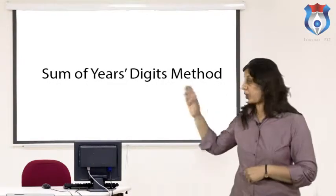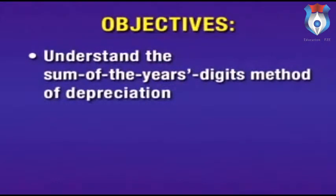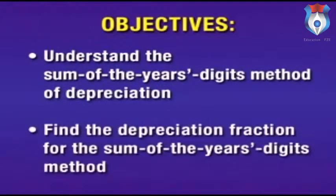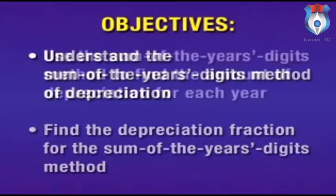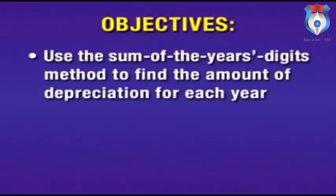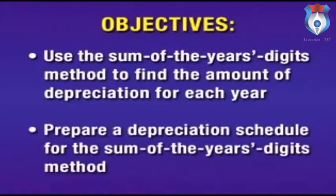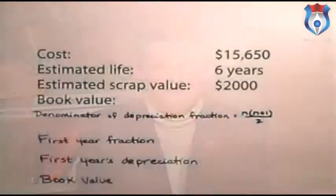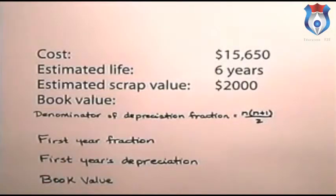Sum of years digits method: in this section we will discuss the sum of the years digits method of depreciation. We will understand the method, find the depreciation fraction, use it to find the amount of depreciation for each year, and prepare a depreciation schedule. The sum of the years digits method uses a depreciation fraction and produces results between the straight-line and the double declining balance method of depreciation.